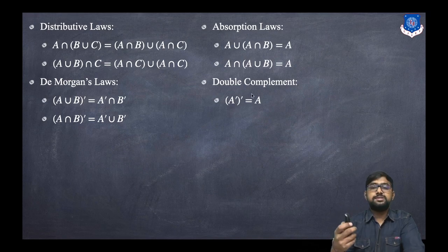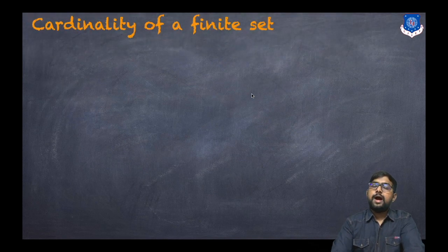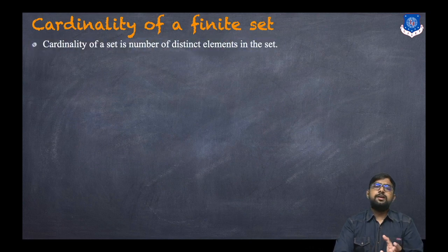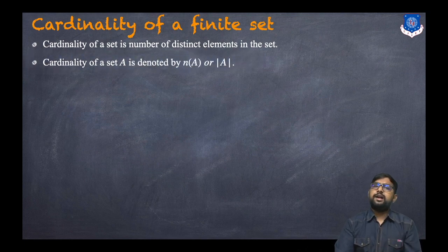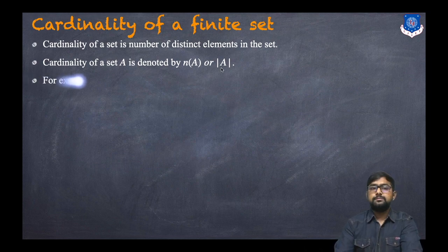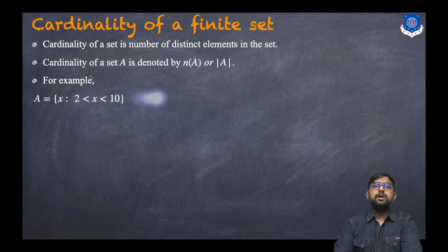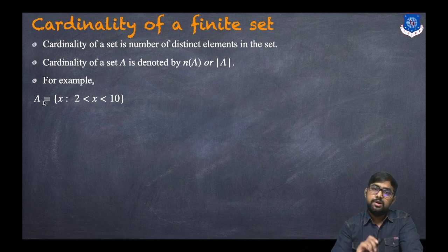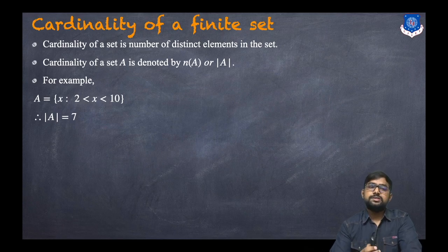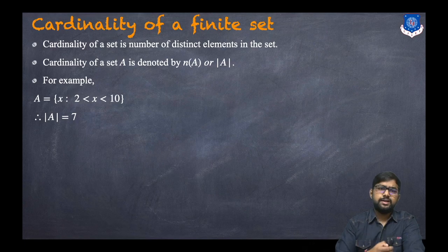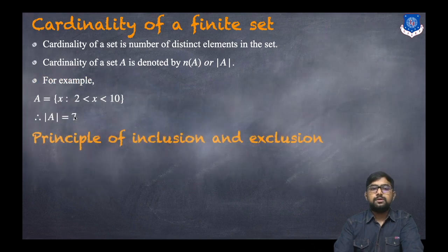Cardinality of a finite set is the number of distinct elements in the set. It is denoted by n(A) or |A|. For example, if A = {x | 2 < x < 10}, the cardinality of A is 7, because the set contains the integers from 3 to 9.